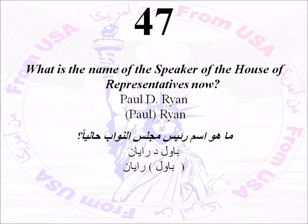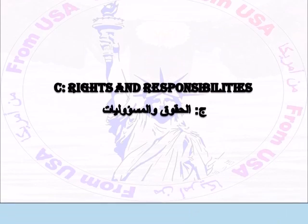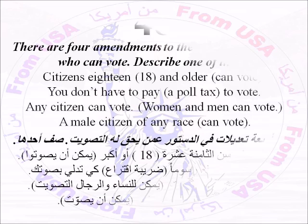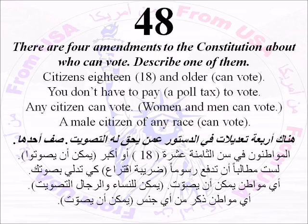Number Forty-Seven: What is the name of the Speaker of the House of Representatives now? American Government Part C: Rights and Responsibilities. Number Forty-Eight: There are four amendments to the Constitution about who can vote. Describe one of them: citizens eighteen and older can vote; you don't have to pay a poll tax to vote; any citizen can vote; or a male citizen of any race can vote. You only have to remember one of them.